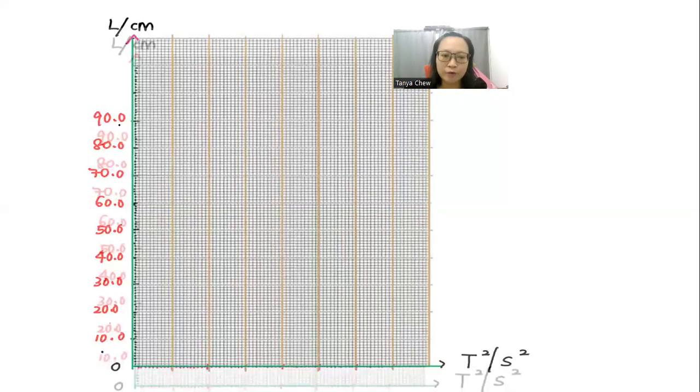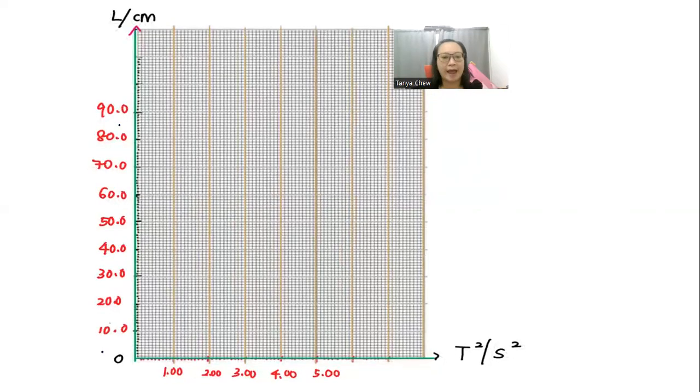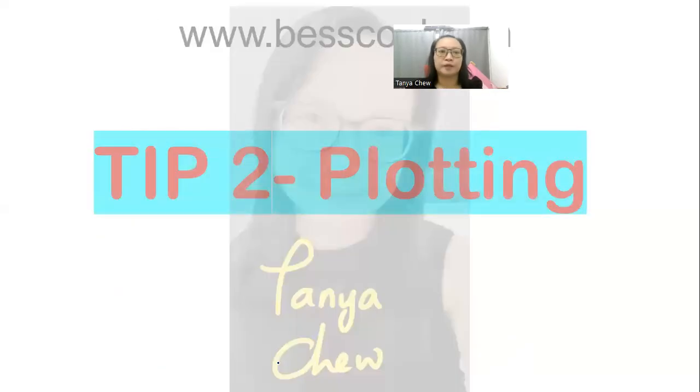What about your x-axis? My x-axis: I would start with 0 as well. And my scales are 1, 2, 3, 4, 5. So let me see how many big squares that I'm using here: 1, 2, 3, 4. More than 4 because my last reading is 4.04. So I use more than 4 large squares here. So I'm safe.